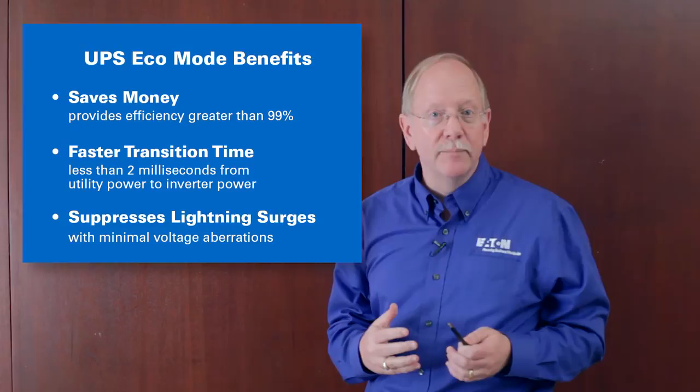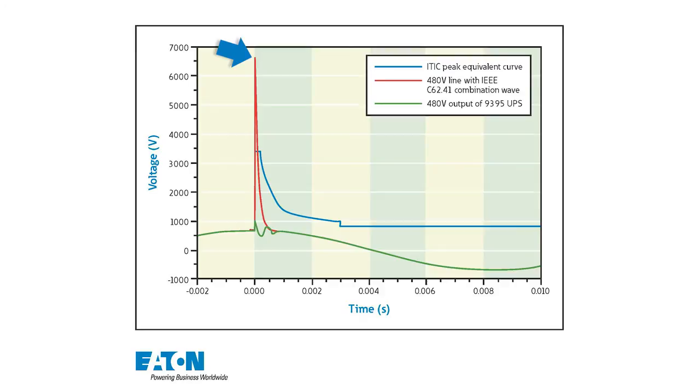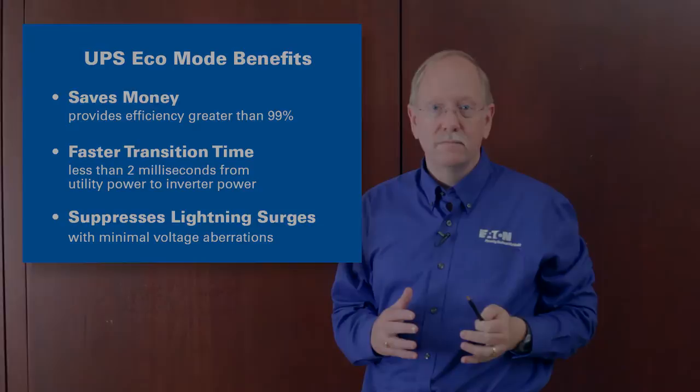One of the primary concerns with eco mode UPS operation is, what if I have a disaster like a lightning strike on the input terminals of the UPS? So, this graphic shows how that would look. I have a 6,500 volt very narrow spike here on the input of the UPS in eco mode, but the green line here shows only a small voltage aberration at the output of the UPS. An eco mode UPS, a good one, can actually suppress lightning strike style surges.